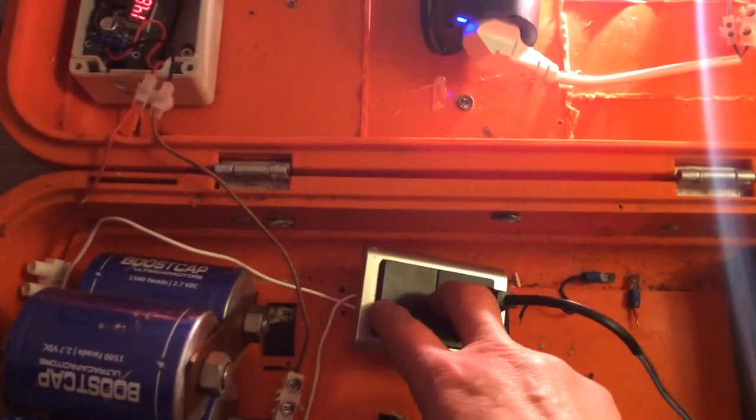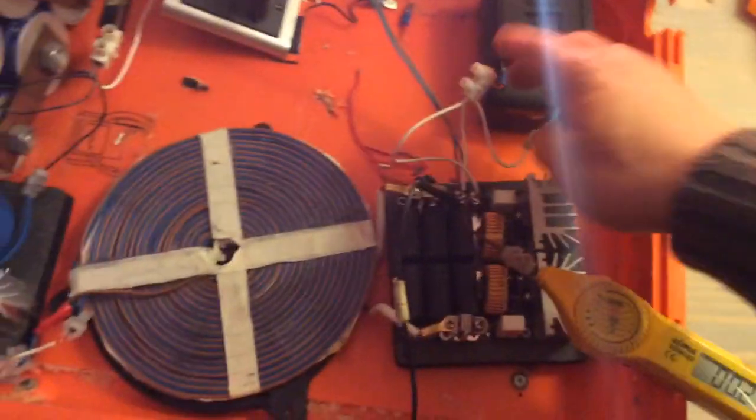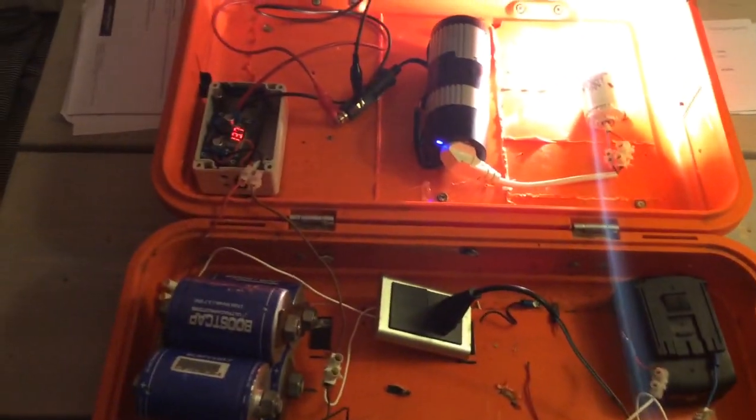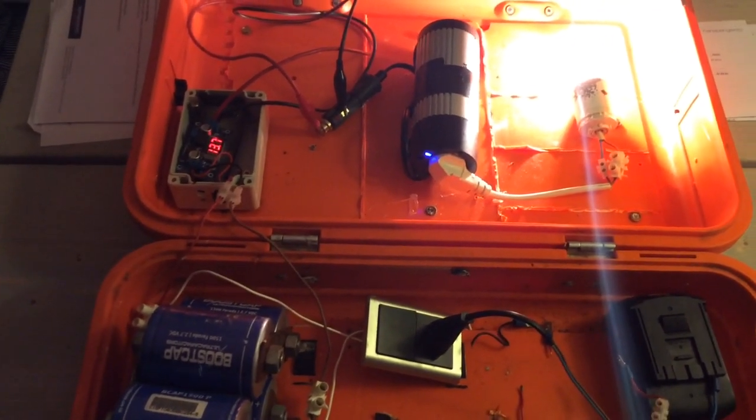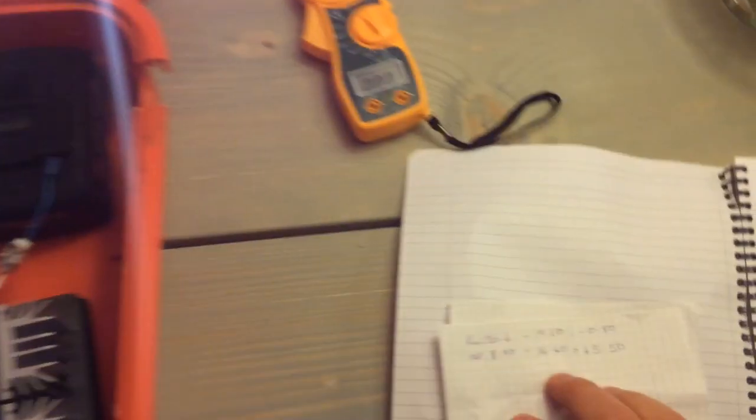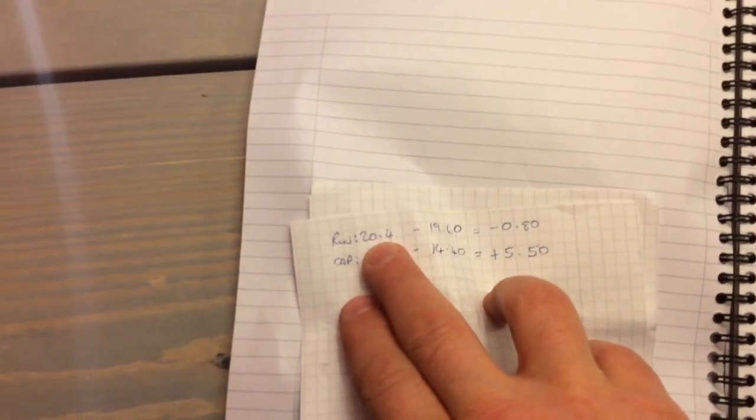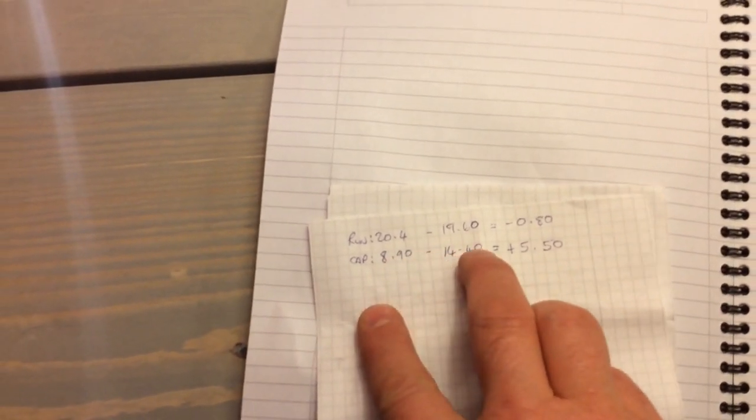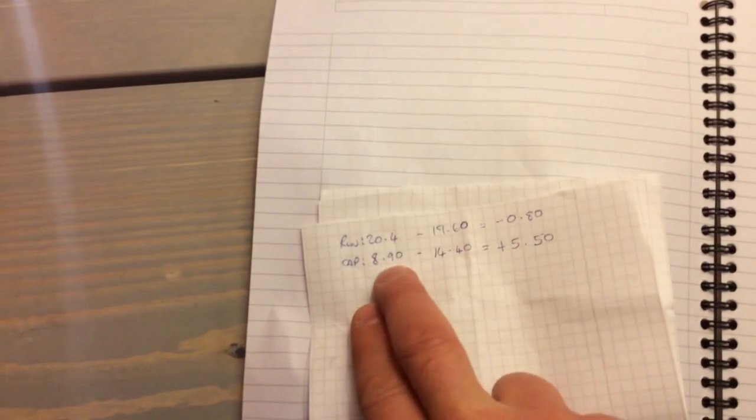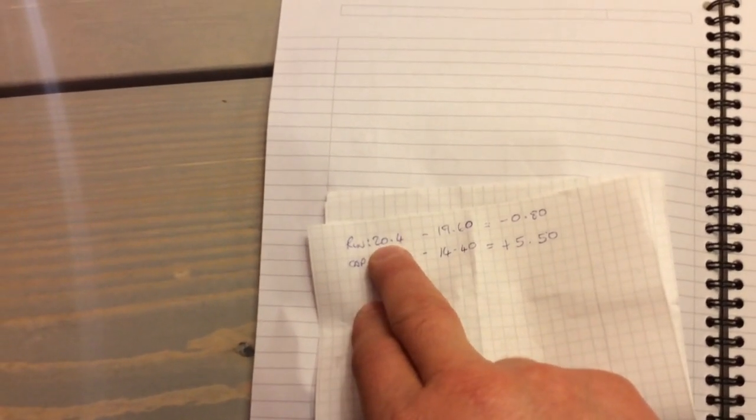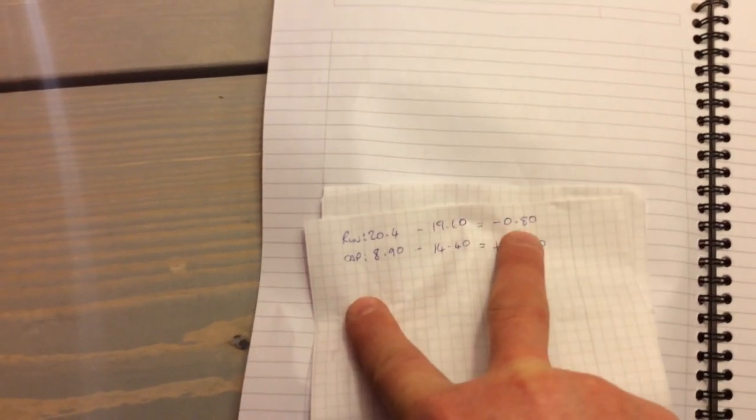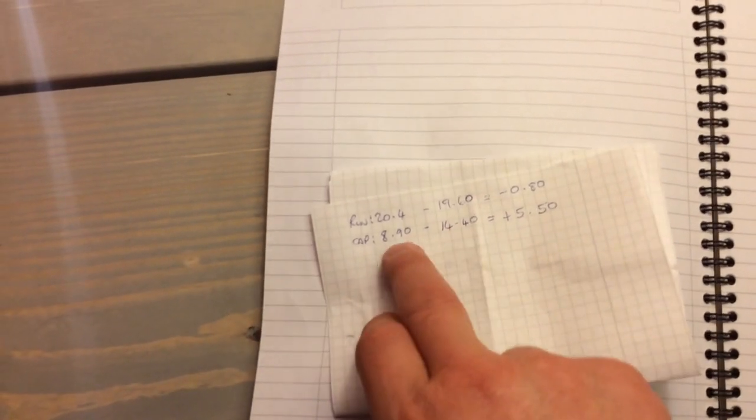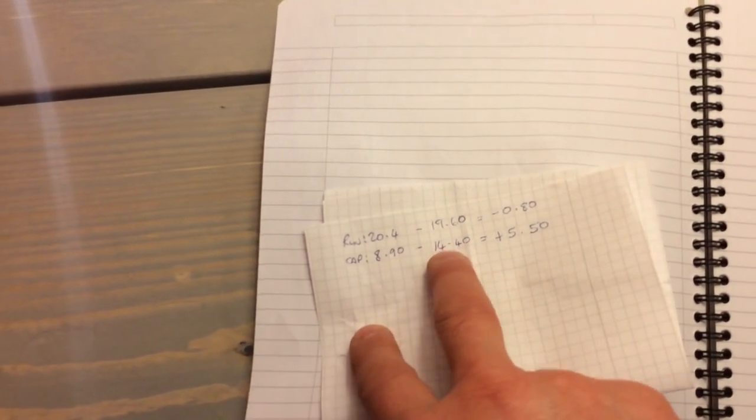So until I have a system that's big enough to handle this, we'll just keep it as it is. To begin with, basically, I had a run battery at 20.4 to charge the caps up to 14.40 from 8.9. Basically, the run battery used 0.80 volts DC to charge from 8.90 to 14.40.